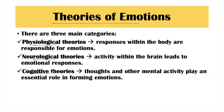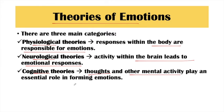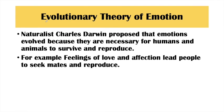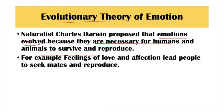Now we will talk about theories of emotions. There are three types: physiological theories, neurological theories, and cognitive theories. Physiological theories say bodily changes evoke emotions. Neurological theories involve the brain's role in emotional responses. Cognitive theories say thoughts evoke emotions. The first is the evolutionary theory of emotions, given by Charles Darwin. He said that emotions evolved because they are necessary for humans and animals to survive — emotions serve a survival purpose. For example, feelings of love and affection let people seek mates and reproduce.